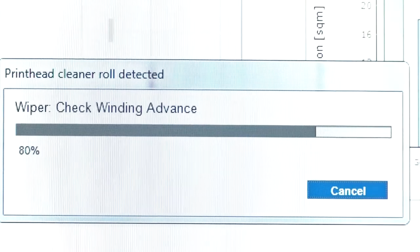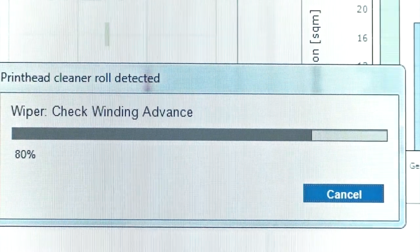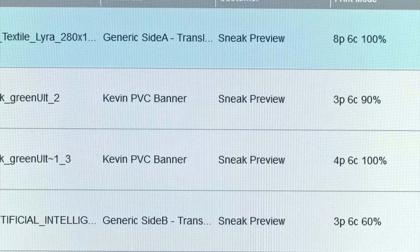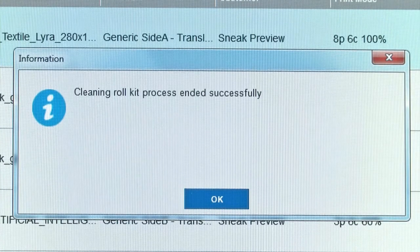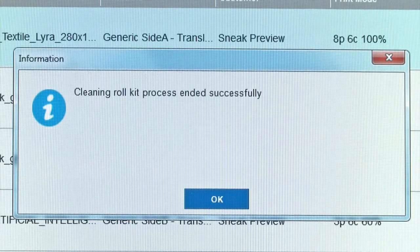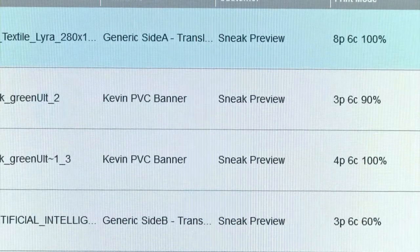If the cleaner roll has not been properly installed, you might see a message about clearing a printhead cleaning roll jam. Pull the assembly out, wind a little of the roll forward, then slide it back in again. The printer checks the roll again.